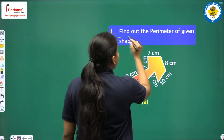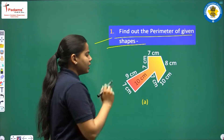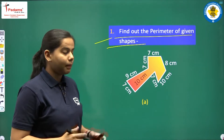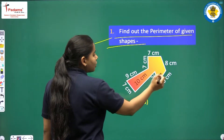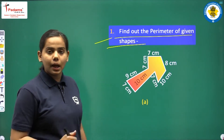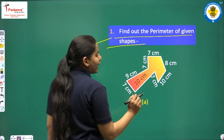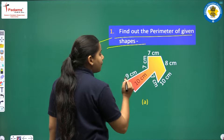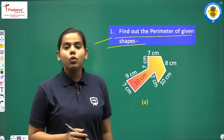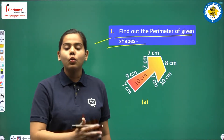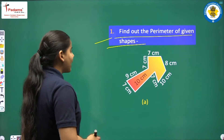Question 1 is: find out the perimeter of the given shape. Here we have one irregular shape. You know what perimeter is — it is the total boundary. Since it is an irregular shape, the length of each side is given. What we will do is calculate the total of all the lengths. So let us get started.